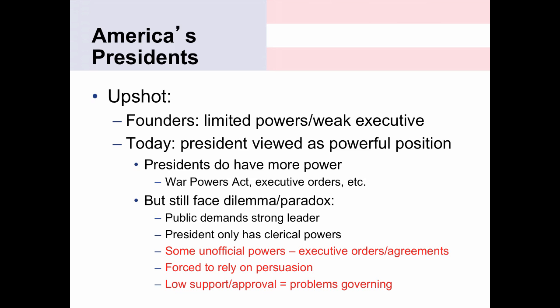There are a few unofficial powers—executive orders and executive agreements—but mostly the president is forced to rely on persuasion: to go public, to rally the public behind his agenda and pressure Congress to pass it. What that means, however, is that if the president's major source of power is public opinion, then when the president has low approval and the public is not behind or is actively against the president, the president is going to have problems governing. Any given president's power will rise and fall throughout their administration depending on how popular they are with the public.